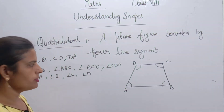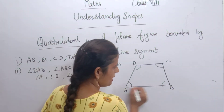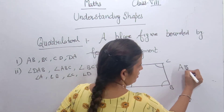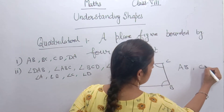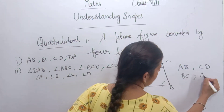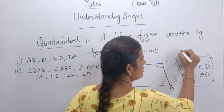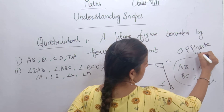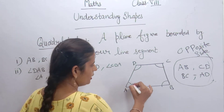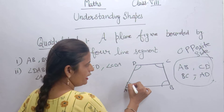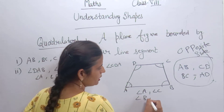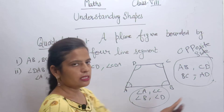Now let's talk about opposite sides and opposite angles. The side AB and the side CD are opposite sides — they do not share a common point. Similarly, the other pair of opposite sides is AD and BC. For opposite angles: angle A and angle C are opposite angles, and angle B and angle D are opposite angles.